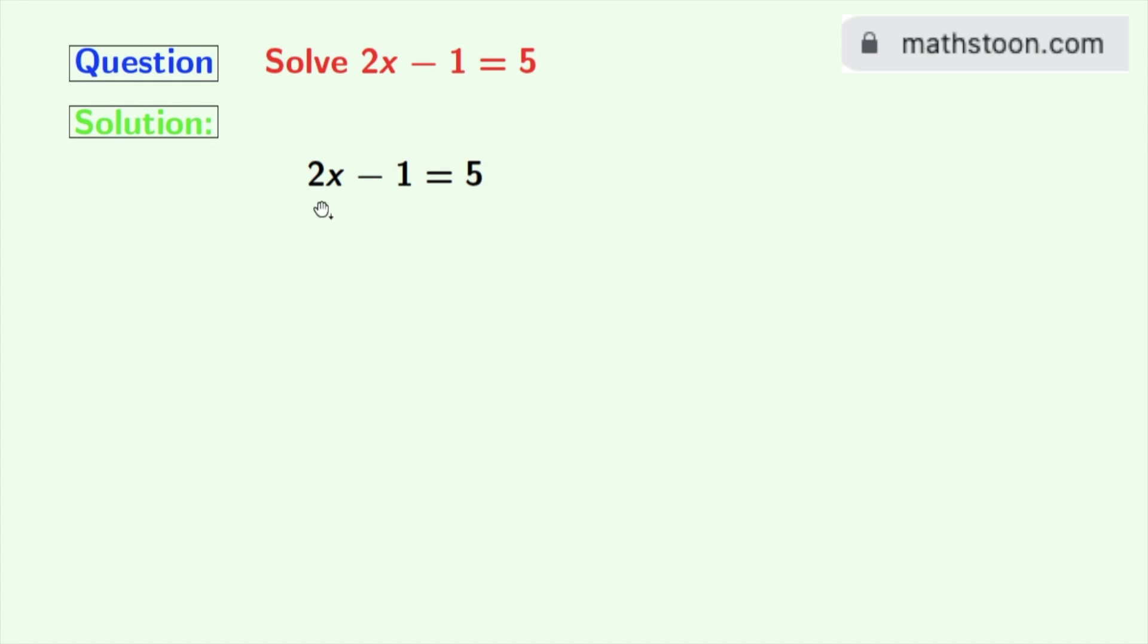At first we will separate the variable and the constant terms. As we have minus 1 in the left hand side so we will take it into the right hand side. For that we need to add 1 to both sides.